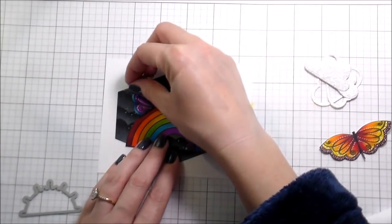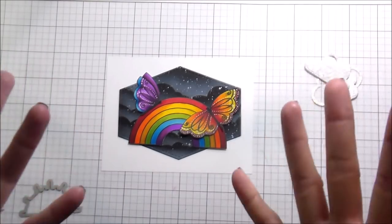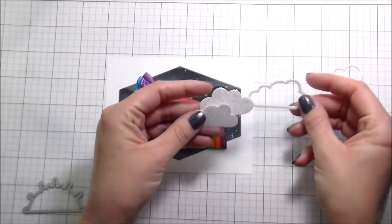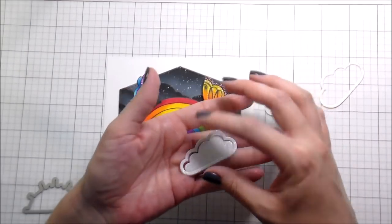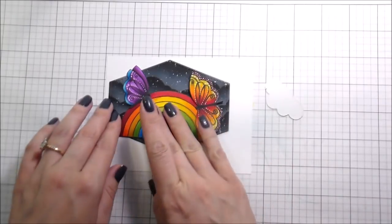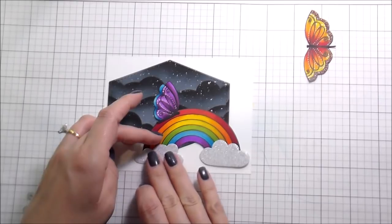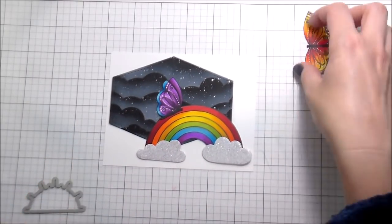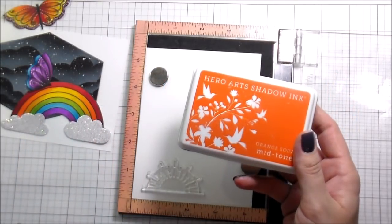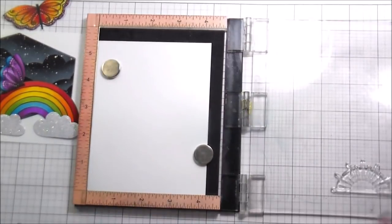Back to the card. So originally this was the idea that I had set up, but I could not figure out where to put the sentiment and I didn't really love it. So now enter in the rainbow dies, which I really had no intention of using to begin with. They have little clouds in them. I love the little clouds. They cut out a little outline cloud and an inside cloud. I'm going to be using the inside clouds and I cut them out of white glitter paper.